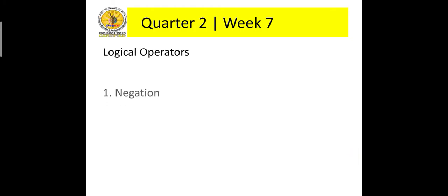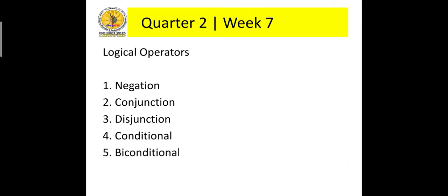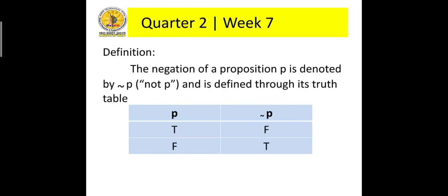We have five logical operators: negation, conjunction, disjunction, conditional, and biconditional. The negation of a proposition P is denoted by not P and is defined through its truth table, as shown below.